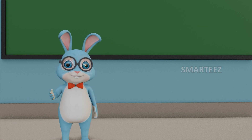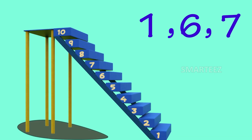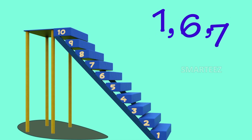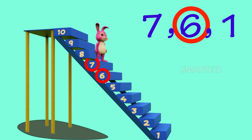Now let's put these numbers in descending order. We know descending order needs to be going down. So let's see — 7 is the highest number, the next higher one is 6, and 1 is at the bottom. So the descending order will be 7, 6 and 1.